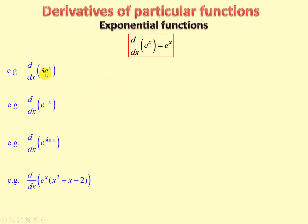Derivative of 3e to the x with respect to x. That's straightforward because 3 can multiply the derivative, so in fact it becomes 3e to the x. It stays 3e to the x.